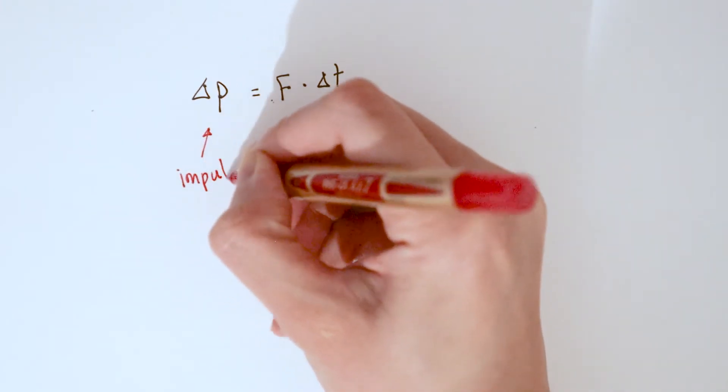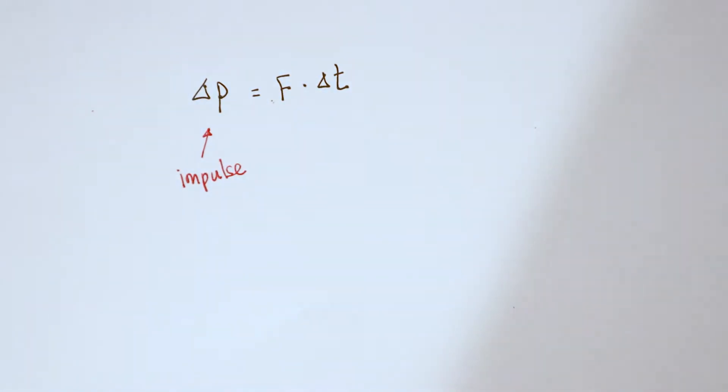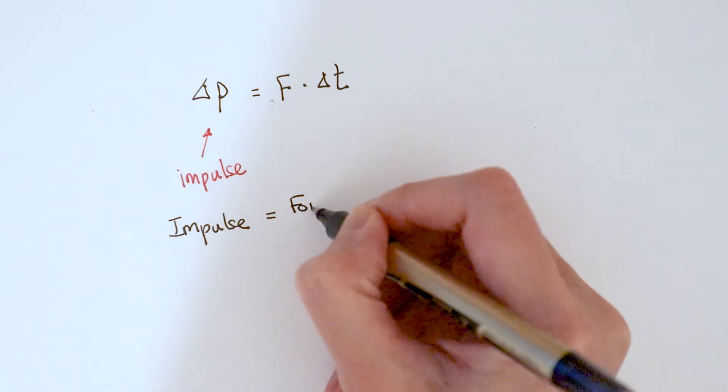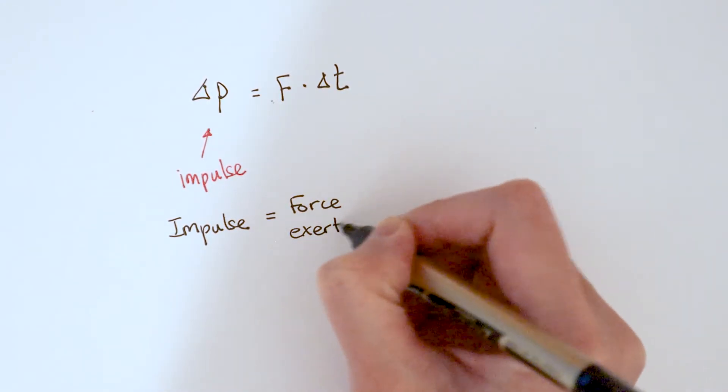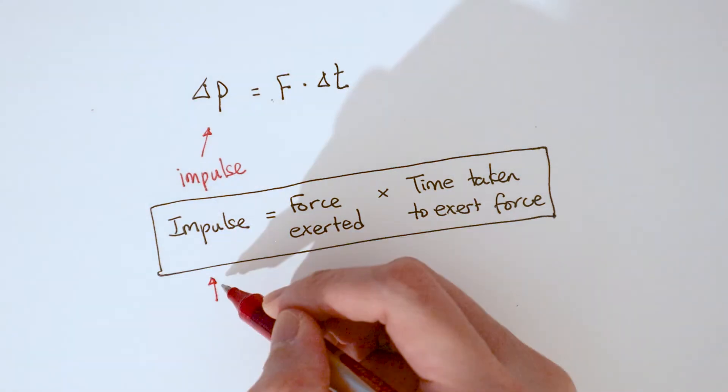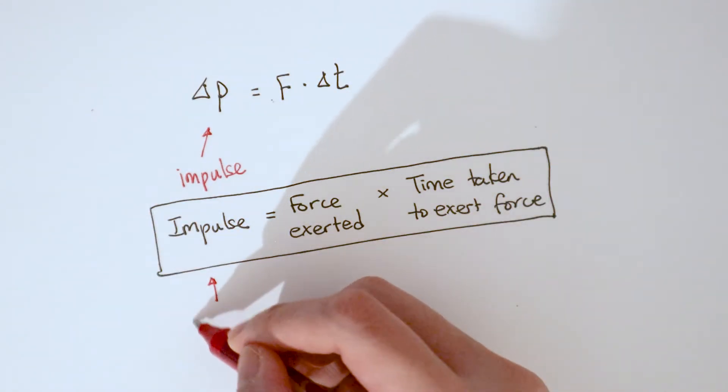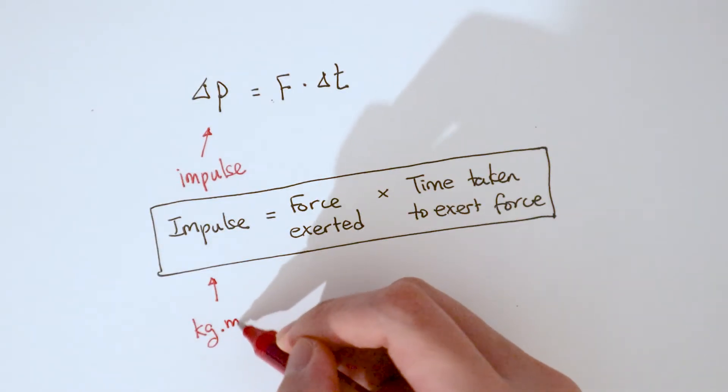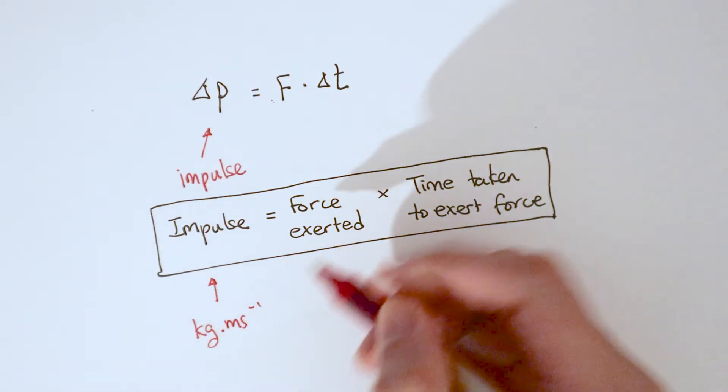Let us rearrange this equation so that we get change in momentum on its own. We have a special name for change in momentum and that is impulse. So in other words, impulse is equal to the force exerted on the object times the time taken to exert this force. On the left-hand side of the equation, that's impulse, that's change in momentum. Earlier we've established that momentum has the unit of kilograms meters per second.